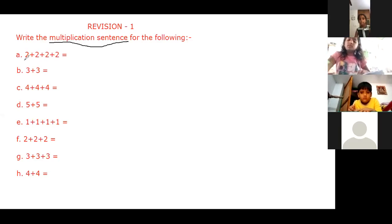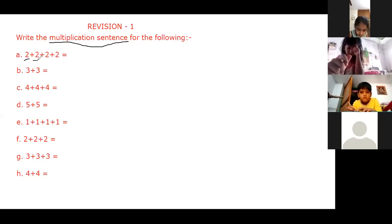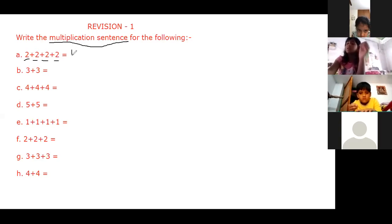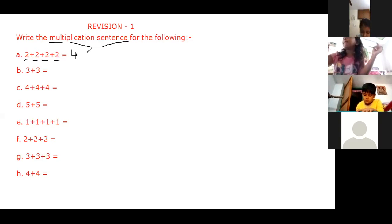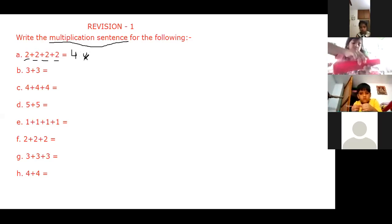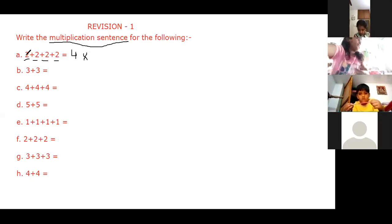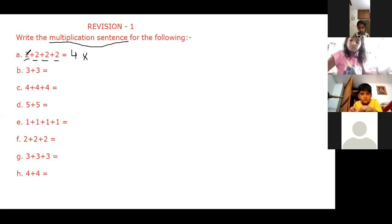In the first bit, you can see that we have repeated the number two — one, two, three, and four times. So we have written this two four times. We will write here four. Then we will put a multiplication symbol. Which number is being repeated here? Here, we are writing number two again and again, so we will write this two after the multiplication symbol.